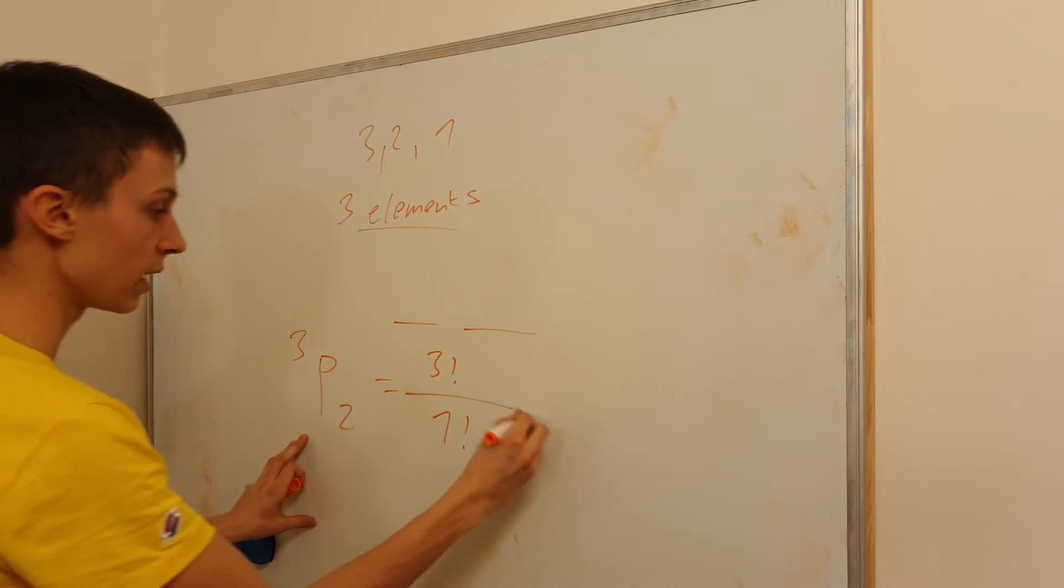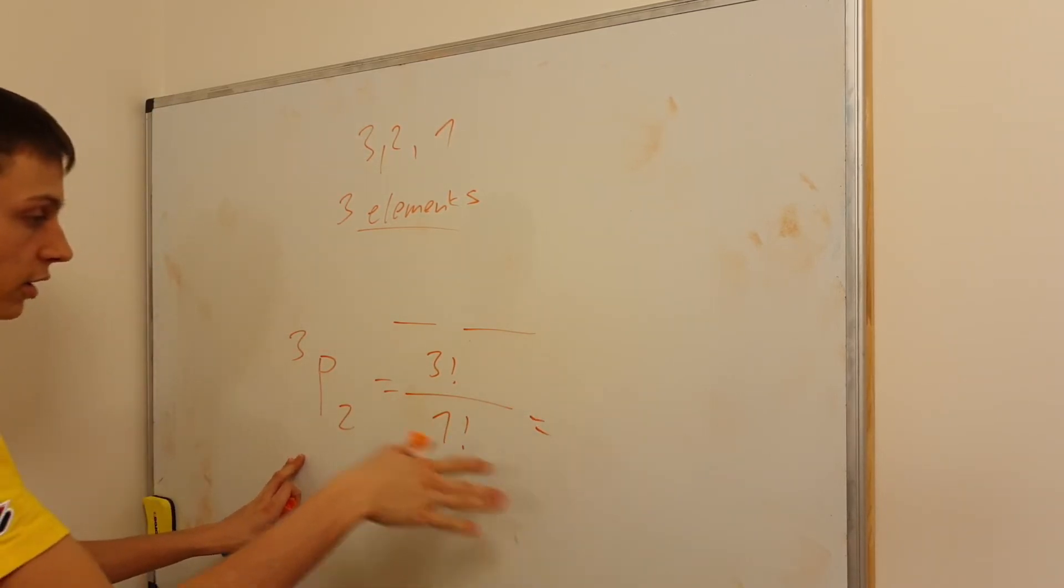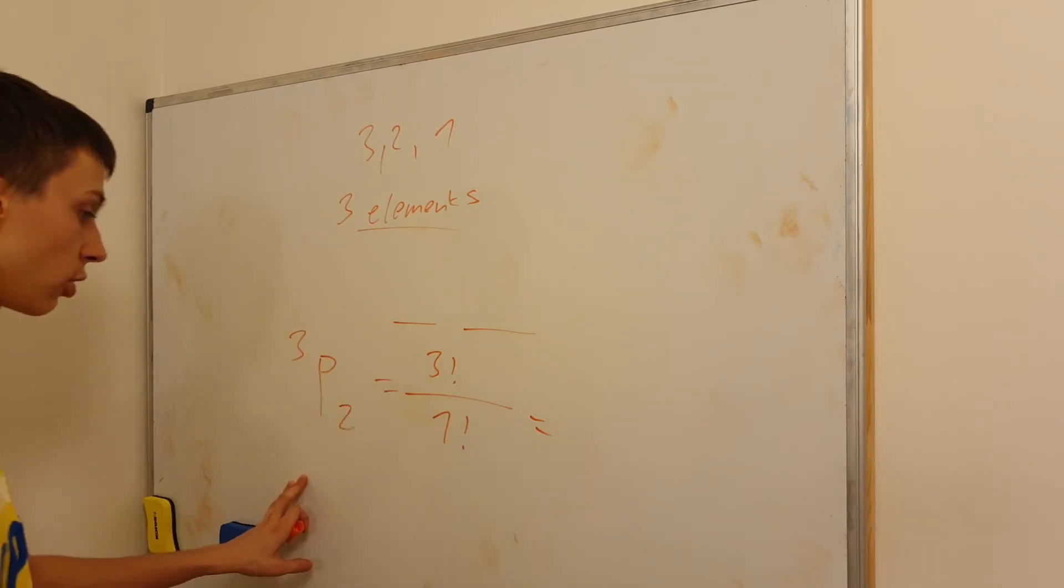So it's 3 minus 2 equals 1. We just calculate this. We know 1 factorial is just 1. It's 1 times 0 factorial, which is 1 times 1. And then we have 3 factorial.